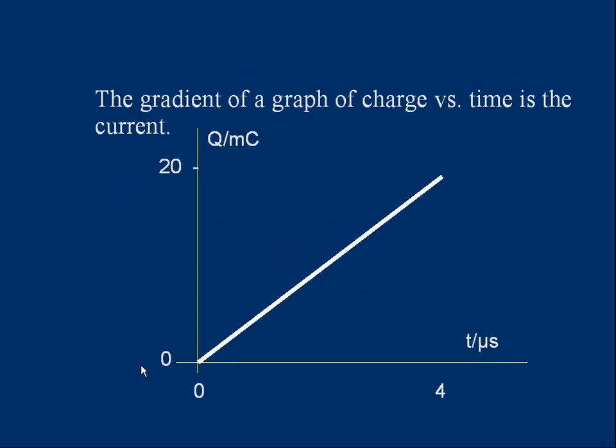Let's look at graphs now. Let's talk about graphs of charge against time. Here's a simple one showing charge flowing and gradually after a certain time, a certain amount of charge has passed a particular point. In fact, after 4 microseconds, 20 millicoulombs has flowed. How can I work out the current from this graph? Well, the current is charge over time. I could simply divide 20 millicoulombs, the charge, by 4 microseconds, the time. But look, if I divide 20, which is this distance here, 20 millicoulombs, by 4 microseconds, which is this distance here, that is the gradient of the graph. It's what we call the rise over the run. It's gradient. So if you've got a graph for charge against time, the gradient of the graph, how steep it is, is the current.